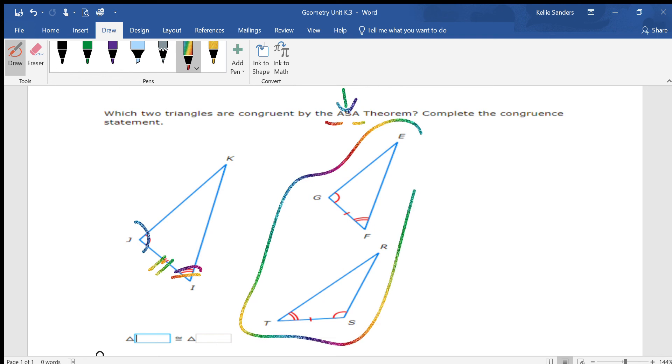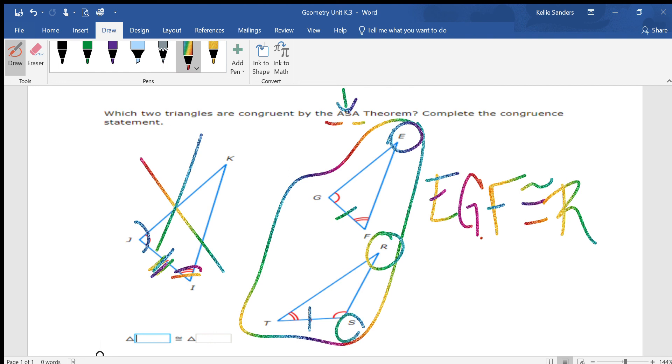But in these two there's just one tick mark on this one, it has two, so it can't be that one. So it'd be EGF, and since I used E first, it doesn't have an angle marker, so that's going to be R, G would be S, and then T.